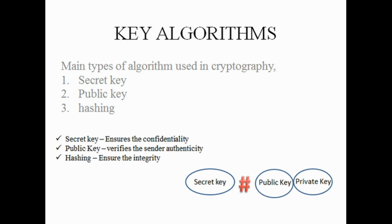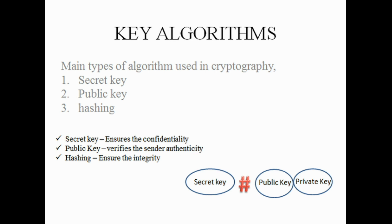Now we are going to see the main types of algorithms used in cryptography, which are secret key, public key, and hashing. In the secret key type, the receiver and sender use a common key — the same key — to encrypt and decrypt the information.